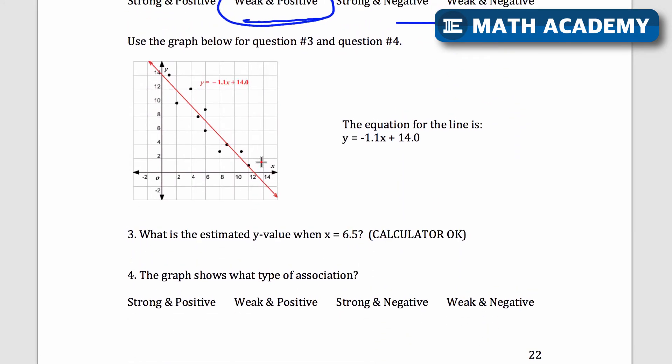Next it says use the graph below for question number three and question number four. Again I'm going to check the scale first. Two, four, six, this is going up by twos. Two, four, six, this is also going up by twos here. Let's see, it says the equation for the line is y equals negative 1.1x plus 14.0. What is the estimated y value when x equals 6.5 on this line?